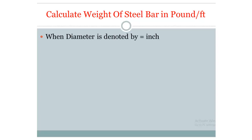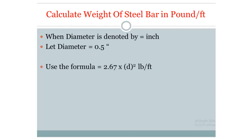Now calculate weight of a steel bar in pounds per feet when diameter is in inches. Let diameter equal 0.5 inches. Use the formula: 2.67 multiplied by D squared, pounds per feet. Input the value of D, and the result is 0.66 pounds per feet.